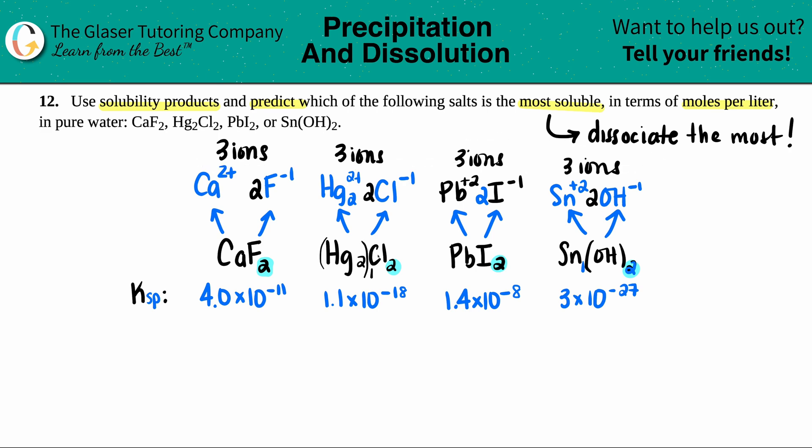Because if your compounds that you have dissociate into the same amount of ions, all you have to do is just look at the Ksp values. But we have to do this work just to make sure. Now, in the rule that states that all the ions are exactly the same, the most soluble is always the one in which you have the highest Ksp values.